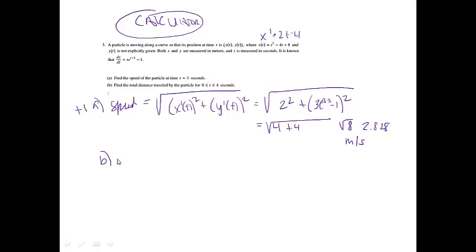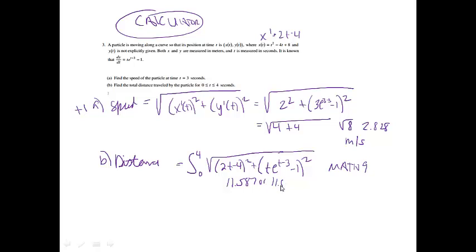Part B: Find the total distance traveled. If we have a parametric equation, we have a formula for total distance traveled. It's the integral from 0 to 4 of the absolute value of velocity, which is the speed formula. This time we'll keep our variables in there. So this will be the square root of (2t minus 4) squared plus (t*e^(t-3) minus 1) squared. Letting math 9 do the work for us, we get 11.587 or 11.588 meters. This was worth 2 points.